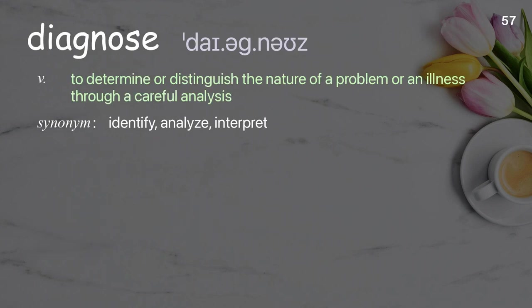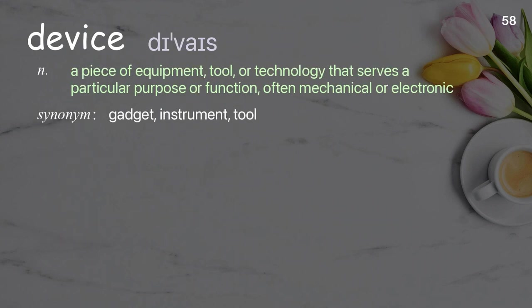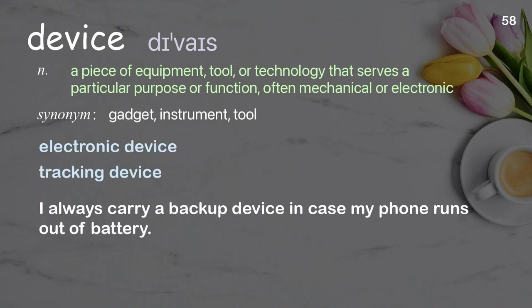Diagnose: to determine or distinguish the nature of a problem or an illness through a careful analysis. Examples: diagnose the problem, diagnose with CT scans. This device is used to diagnose brain cancer and other tumors. Device: a piece of equipment, tool, or technology that serves a particular purpose or function, often mechanical or electronic. Examples: electronic device, tracking device. I always carry a backup device in case my phone runs out of battery.